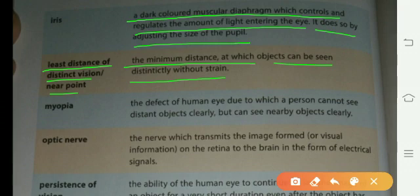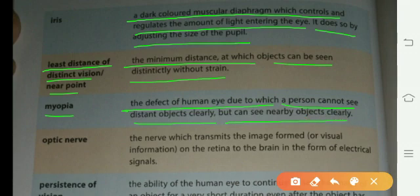Myopia: the defect of human eye due to which a person cannot see distant objects clearly, but can see nearby objects easily.